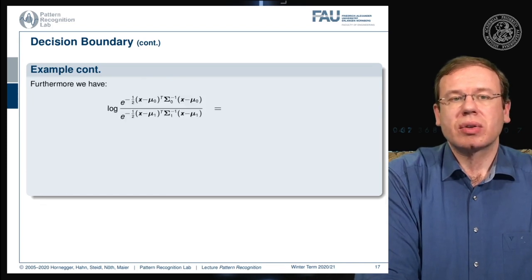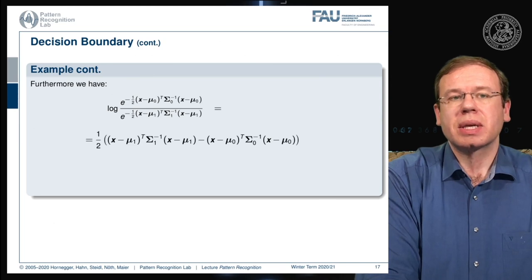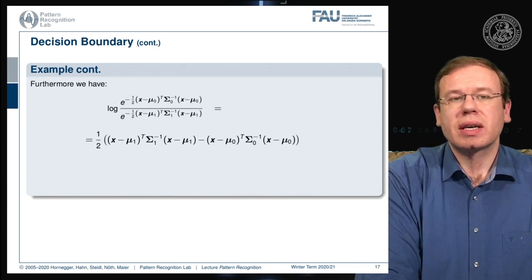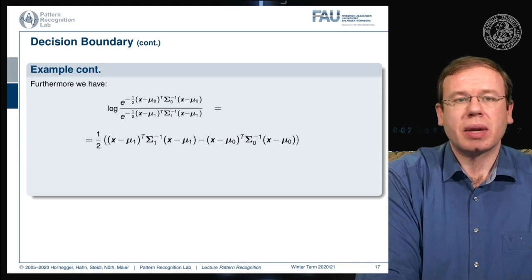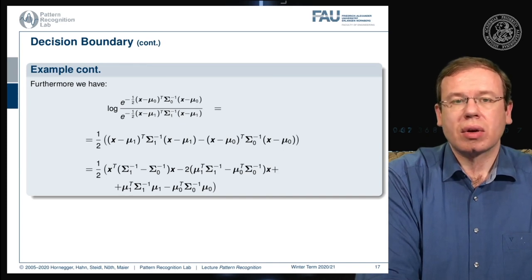We can also look into the remaining part that is dependent on x. We can reformulate this a little bit because the logarithm can be used to get rid of the exponential functions, and if we do so we can rewrite this into these terms that are essentially used in the Gaussian in the exponent. These are quadratic terms involving the covariance matrices, and multiplying everything out we can find a description with a quadratic term, a linear term, and a constant term that is no longer dependent on x.